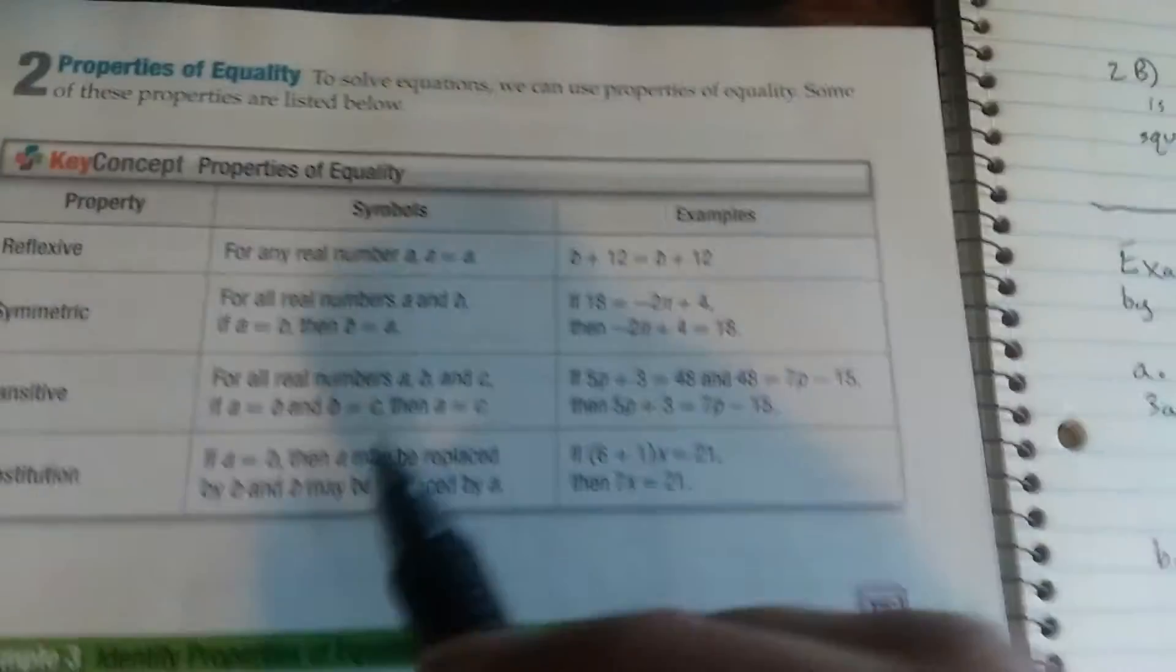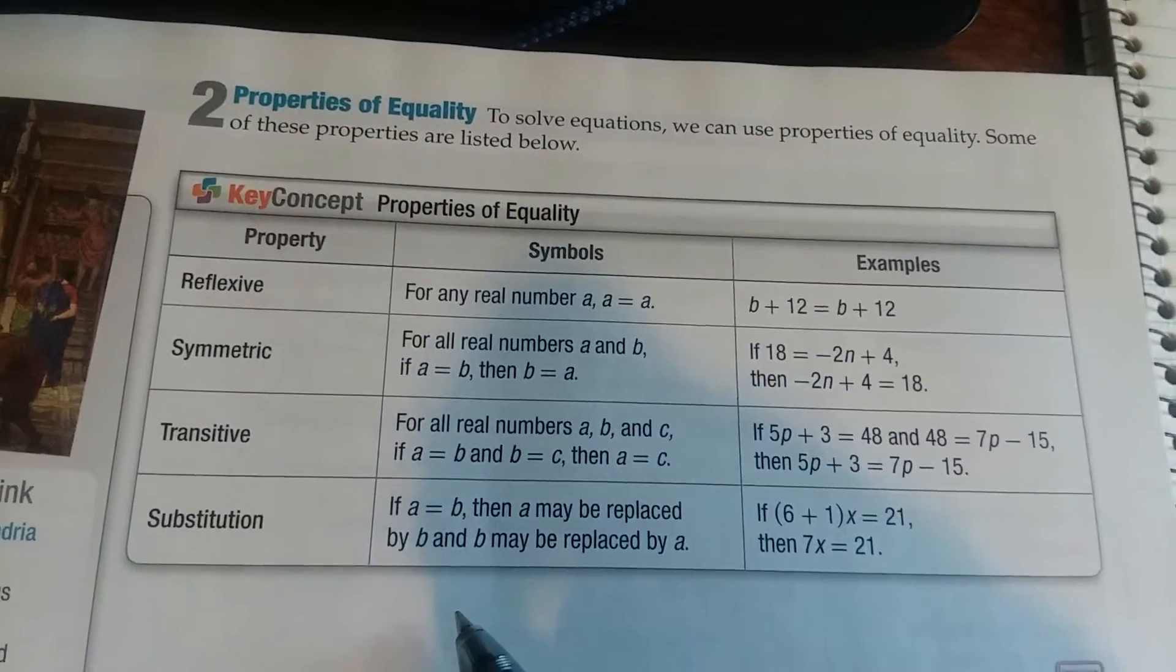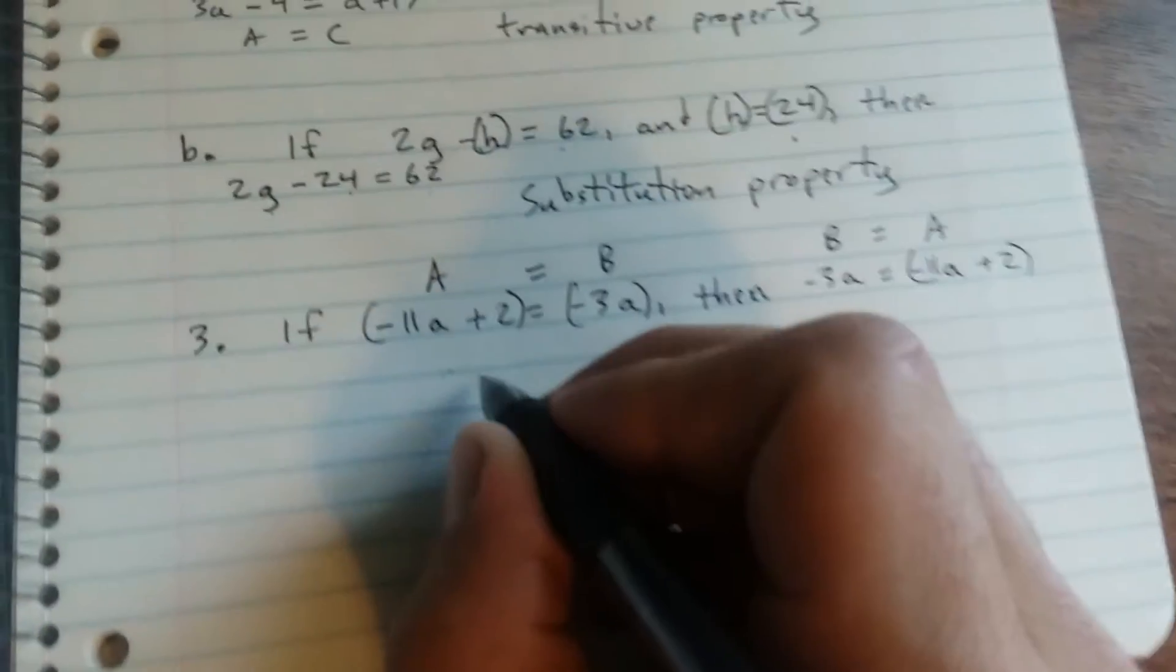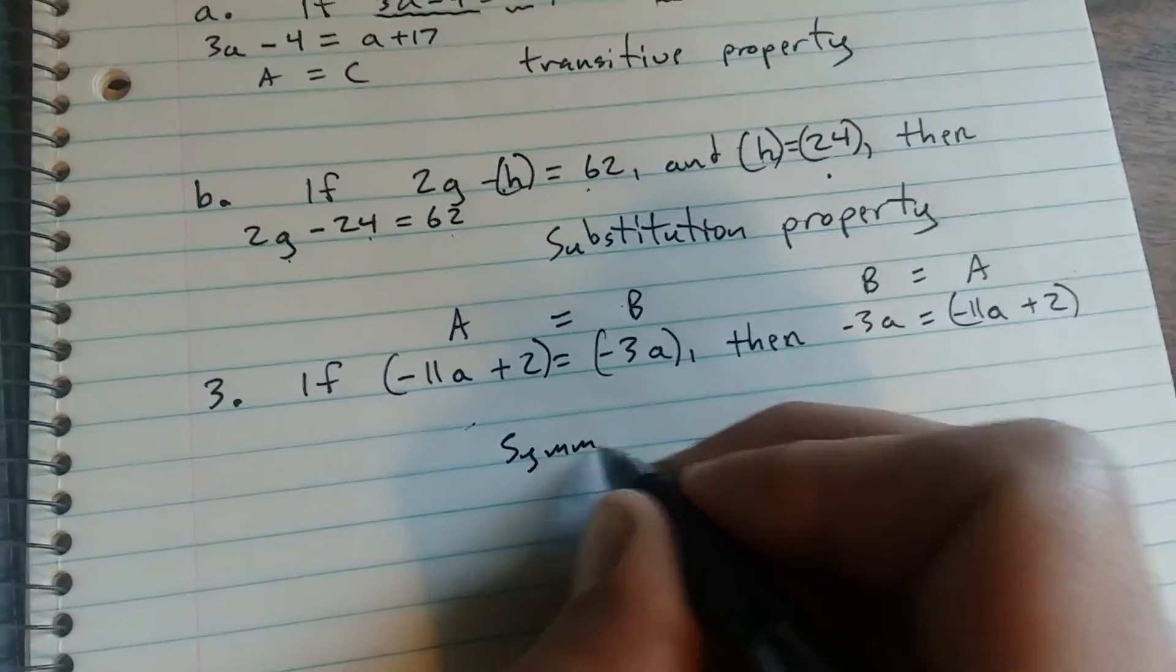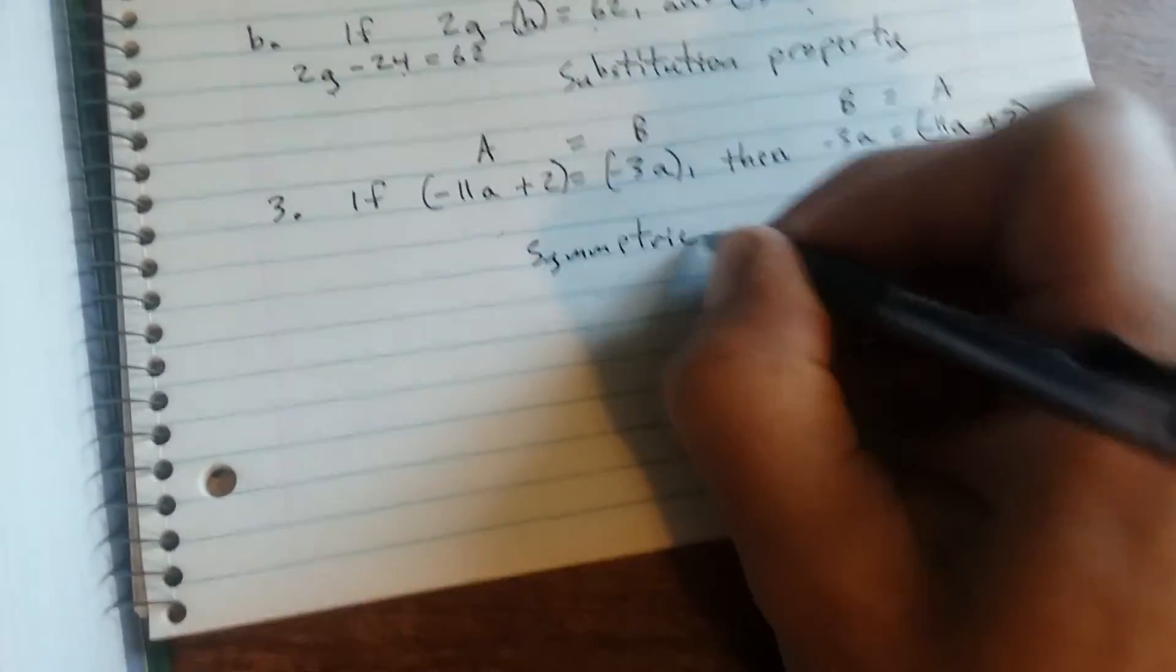That is, if you look, that is the symmetric property. For all real numbers, A and B. If A equals B, then B equals A. Symmetric property.